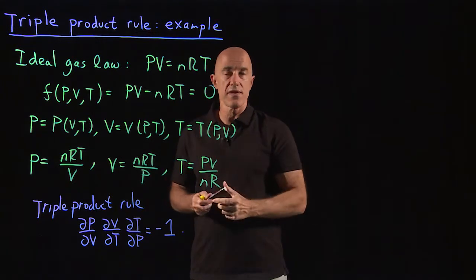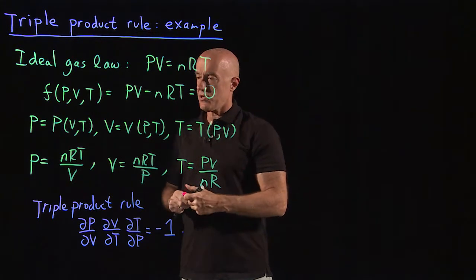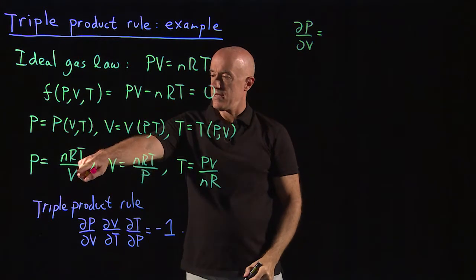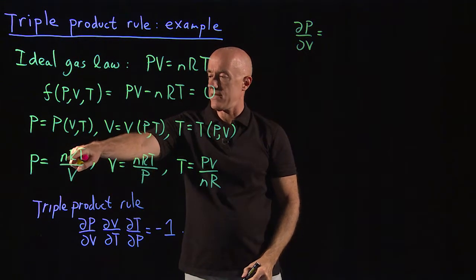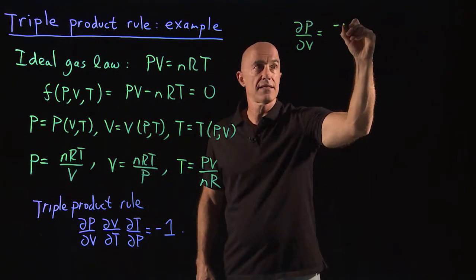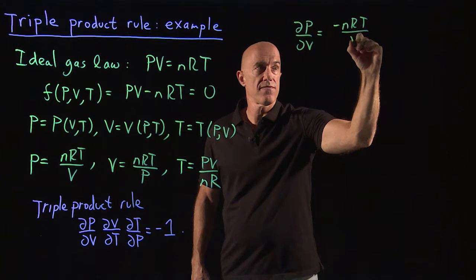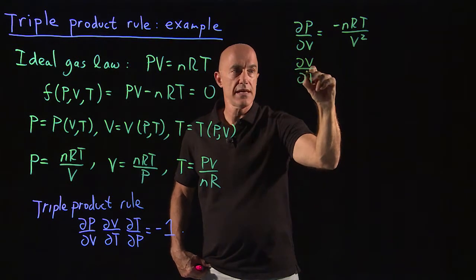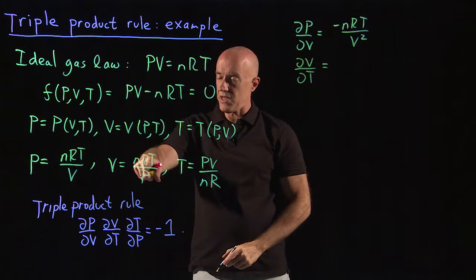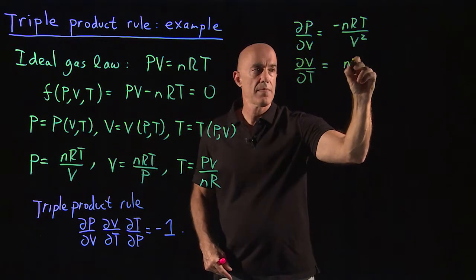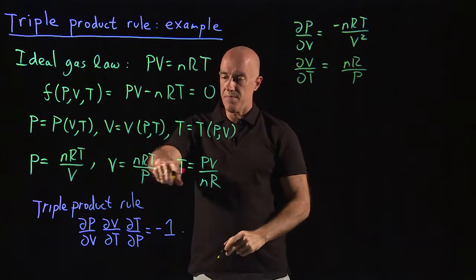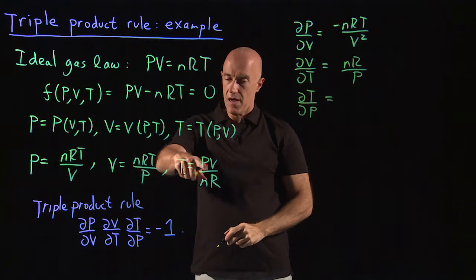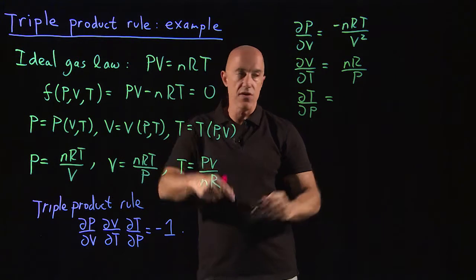So let's compute these derivatives and see if it works. The partial derivative of P with respect to V is — since P equals nRT times V to the minus 1 — minus V to the minus 2, so minus nRT over V squared. The partial derivative of V with respect to T is linear in T, so it's just nR over P. And the partial derivative of T with respect to P is also linear in P, so it's just V over nR.